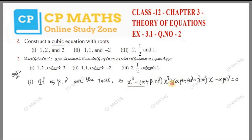So the signs are alternating: minus, plus, minus. If alpha, beta, gamma are the roots, this is the cubic equation form.